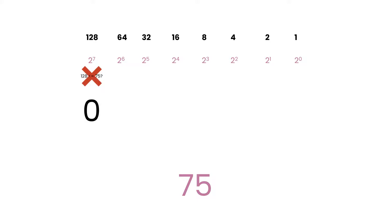Now that we know how we can convert binary numbers into decimal, let's take a look at it the other way round. Let's try to work out the binary number for decimal 75. This process is done working our way from left to right, checking if each possible binary value is less than or equal to our target value, which is 75. We'll start at the leftmost column and check if the value is less than or equal to our target number — which in this case it isn't, so we'll put a 0 in that column. Moving on, we'll see that 64 is less than 75, so we'll set this column to a 1 and subtract 64 from our target number, leaving us still needing an extra 11.